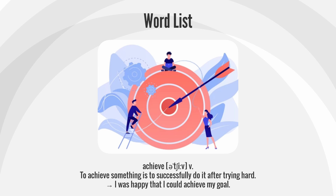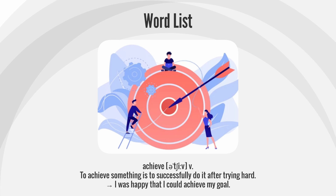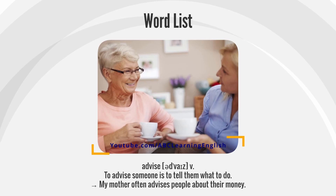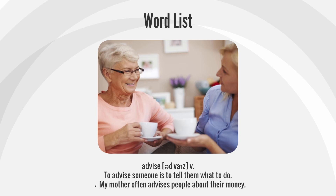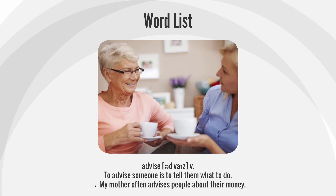Achieve: To achieve something is to successfully do it after trying hard. I was happy that I could achieve my goal. Advise: To advise someone is to tell them what to do. My mother often advises people about their money.